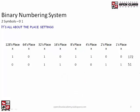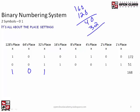Let's do 168 in blue. We start with 128. 168 minus 128 is 40. Then 64 is too big, so we go to 32. 40 minus 32 is 8. 16 is too big, so we take 8. That leaves 0 — so the rest are all zeros. An even number, so there's no 1 in the 1's place. And we're right.